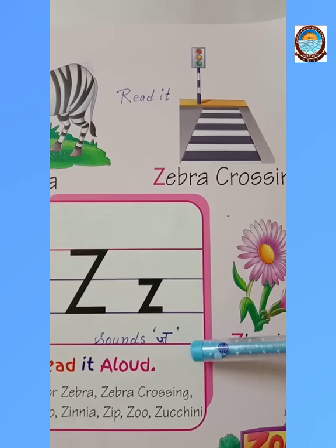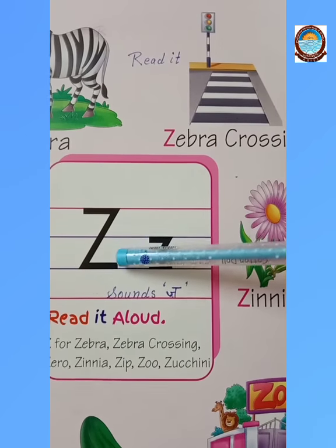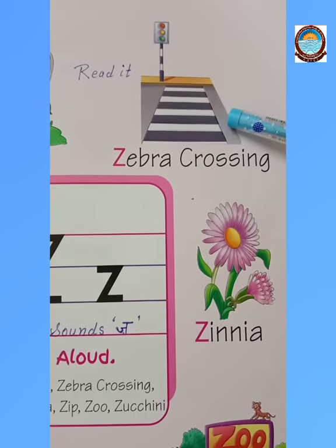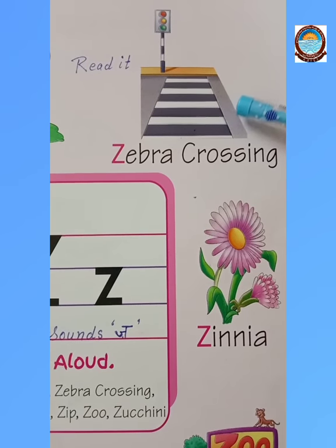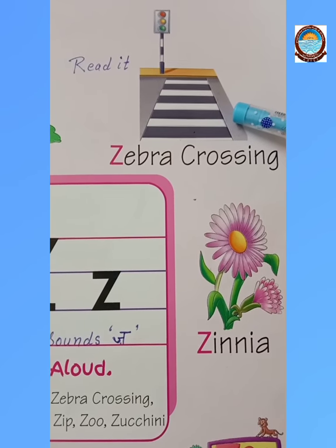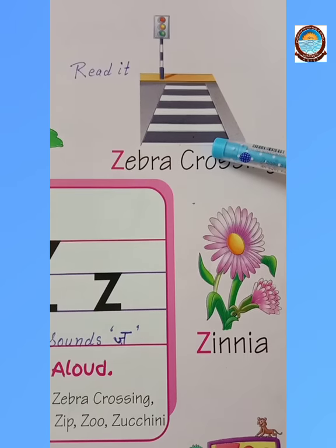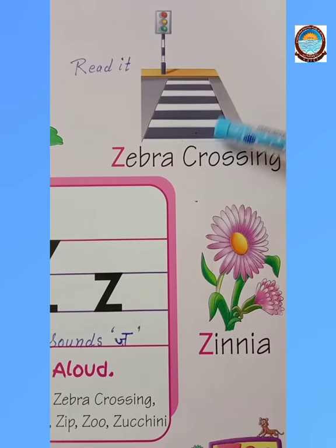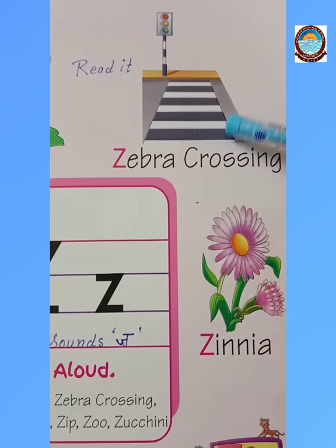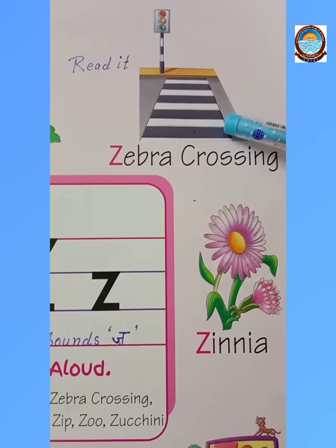Z — the zebra crossing. Z, the zebra crossing. Do you know what a zebra crossing is? These are black and white stripes marked on the road for pedestrians to cross the road safely.